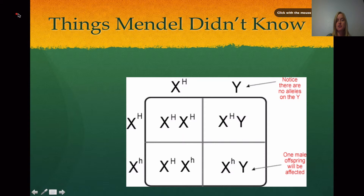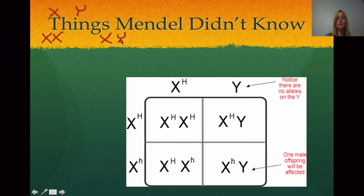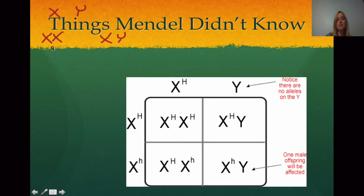Sex-linked genes are the genes that are on the X or Y chromosomes. As a reminder, females are XX — they have two X chromosomes — and males are XY, with an X chromosome and a Y chromosome. This leads to some special situations when it comes to genes on these chromosomes. Let's take hemophilia, for example. Hemophilia is a blood disorder that was very common among royal families.